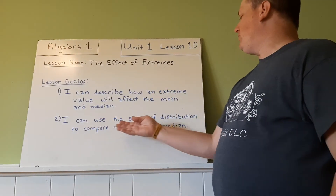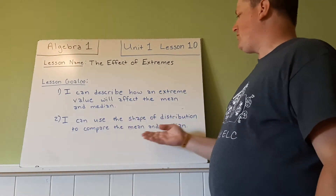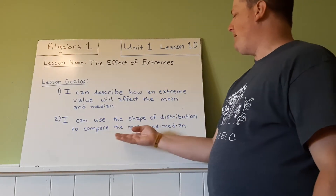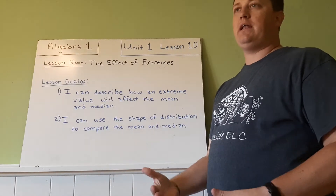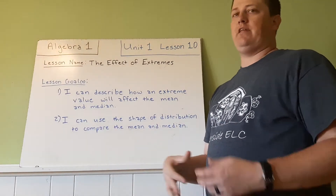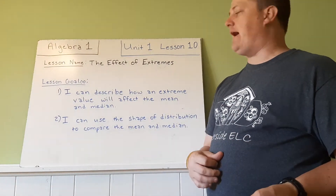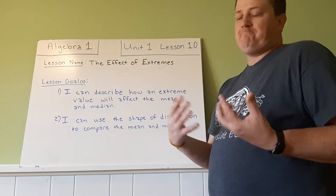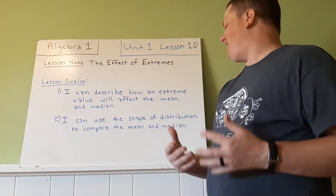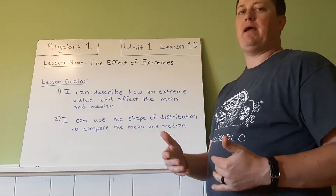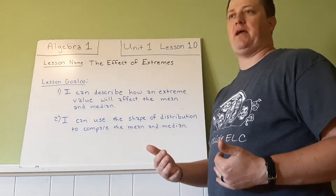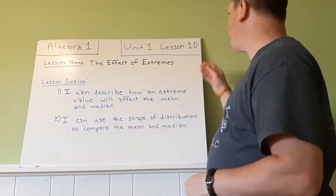I can use the shape of distribution to compare the mean and median. So, if we look at data and notice that it's skewed right or skewed left, how does that affect the mean and median, and can we make estimates based off of that?